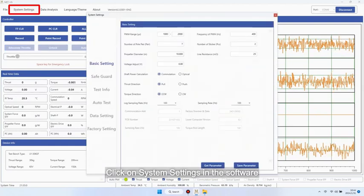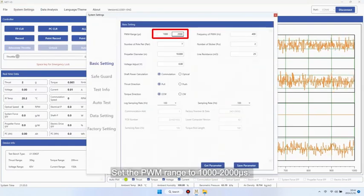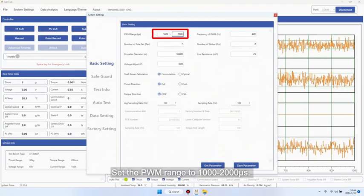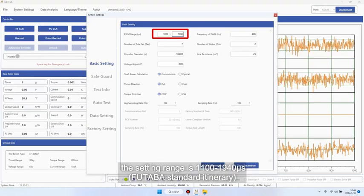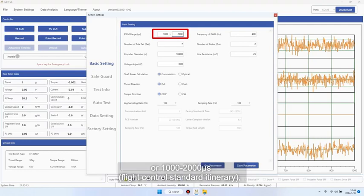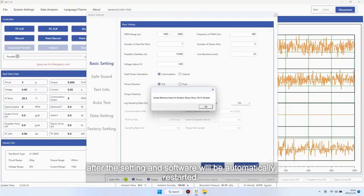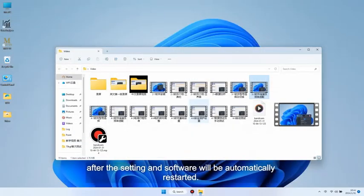Click on system settings in the software to enter the basic settings interface. Set the PWM range to 1000 to 2000 microseconds. Generally, for the ESC supporting calibration, the setting range is 1100 to 1940 microseconds or 1000 to 2000 microseconds. After the setting, the software will automatically restart.